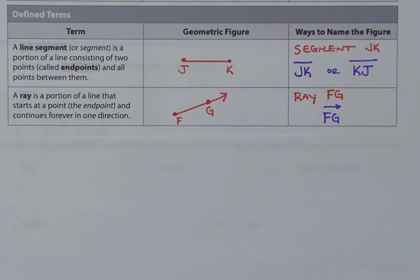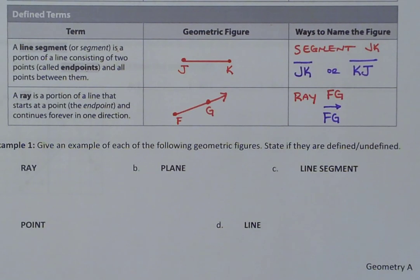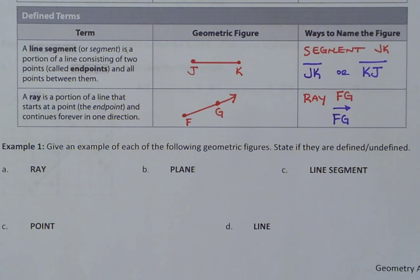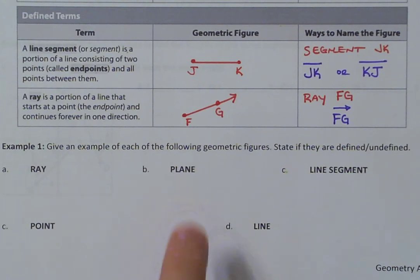That accomplishes learning goal number one. Example one asks you to give a real-life example of each of the following geometric figures and state if they are defined or undefined. For a matter of time, I'm not going to run through this example right now — I'll leave that for you to think about based off the definitions we've talked about. If you need to, you can ask about these later, or take a look at my completed notes that I've uploaded.